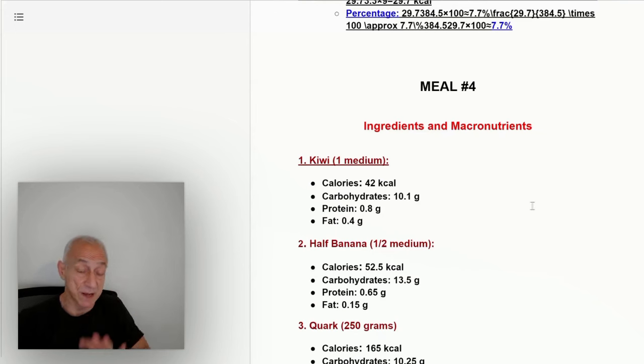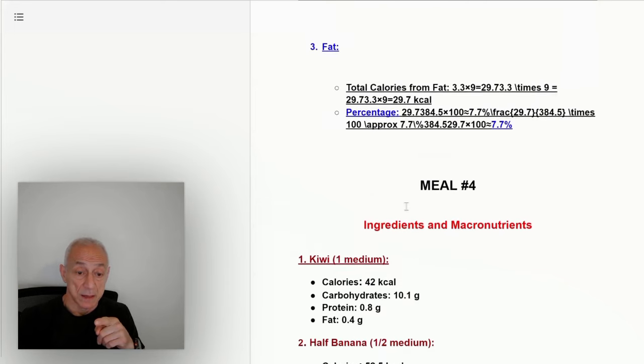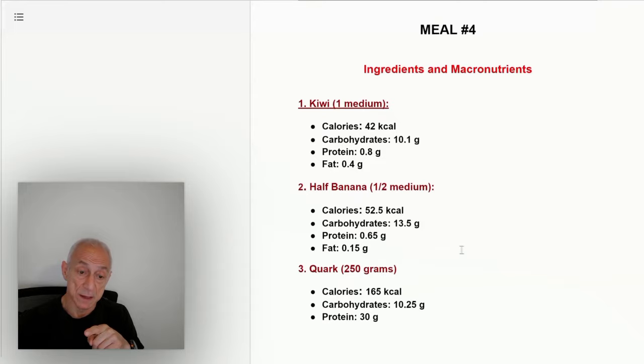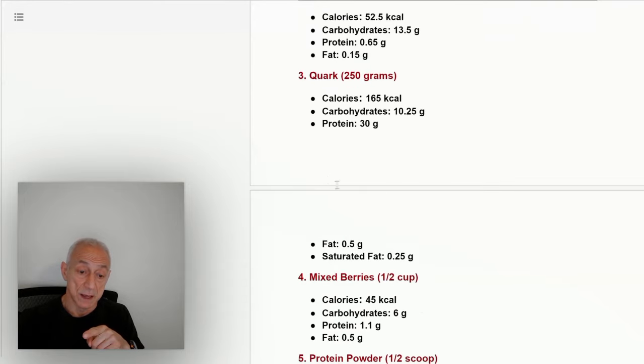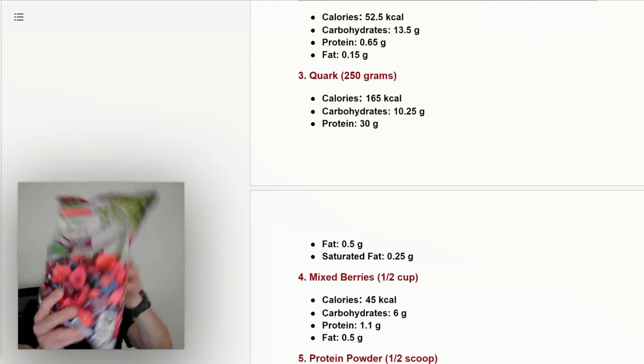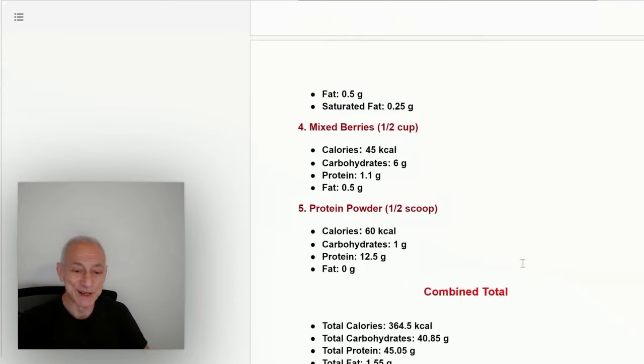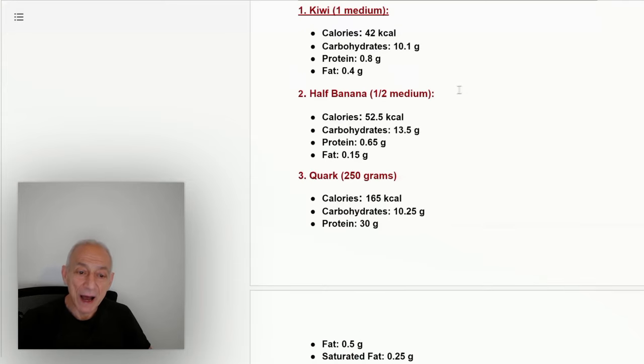Now, I eat five times a day. This is meal number four that I eat around 7, 8 o'clock. It includes a kiwi, a half a banana, and mixed berries. Here are the mixed berries I use: blueberries, raspberries, all of those.